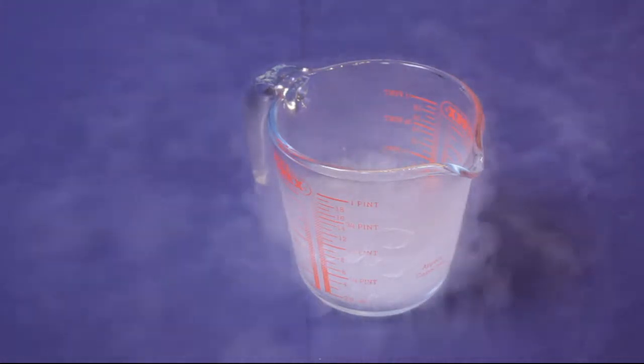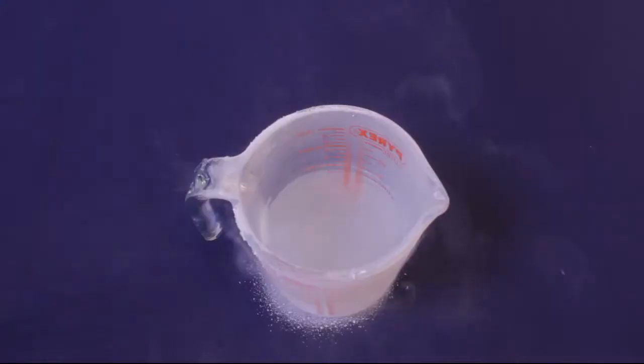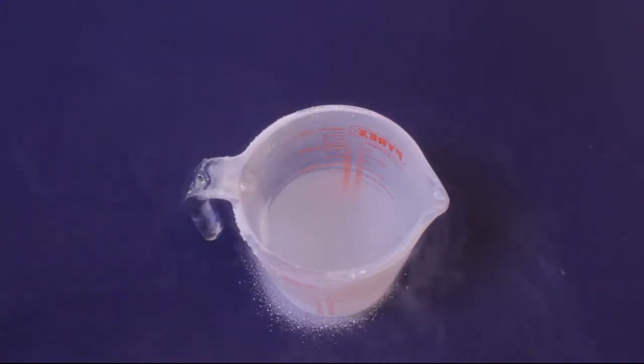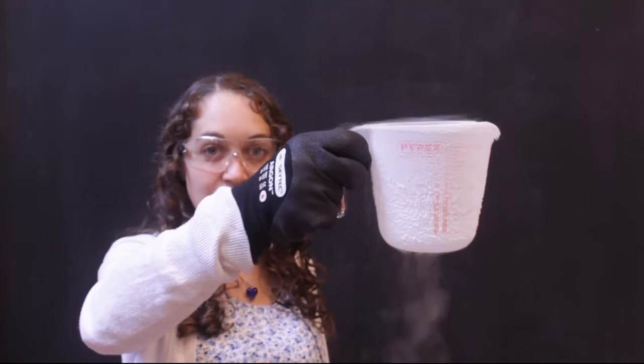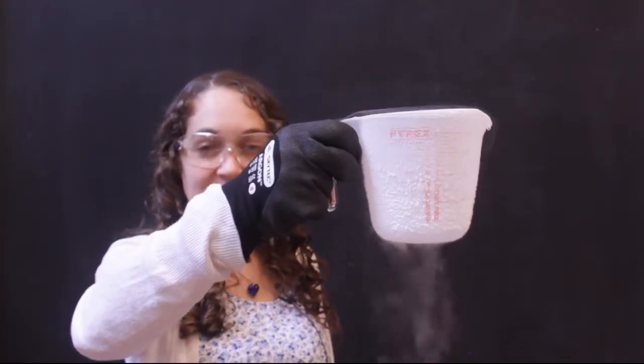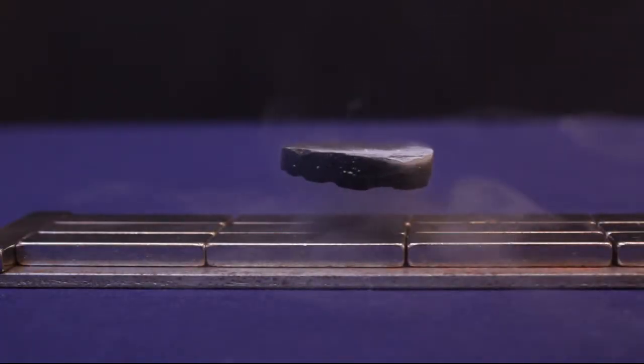The coldest temperature recorded outside on Earth ever is minus 90. And this stuff is a full 100 degrees colder than that. In fact, nitrogen becomes a liquid at minus 196 degrees C. And that's how cold we had to get our superconductor to make it show these amazing properties.